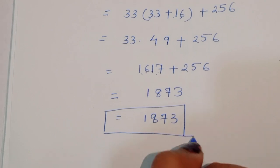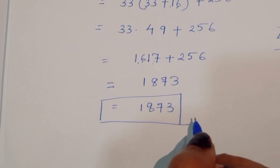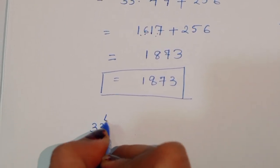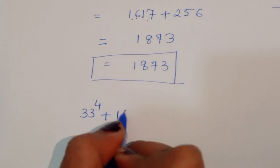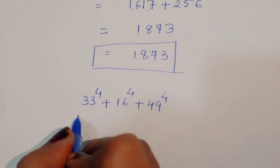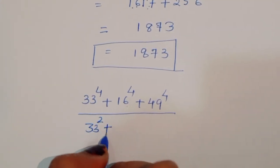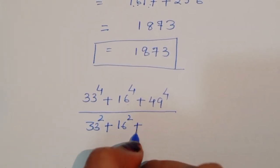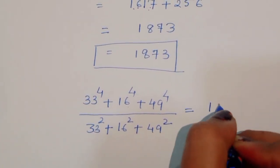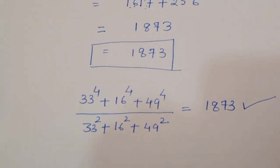So the answer to the question (33⁴ plus 16⁴ plus 49⁴) divided by (33² plus 16² plus 49²) is equal to 1873. This is the solution.